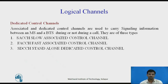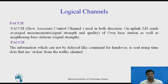The last group is dedicated control channels. Signaling information is carried between MS and BTS using associated and dedicated control channels, during or not during a call. There are three types: SDCCH (Standalone Dedicated Control Channel), SACCH (Slow Associated Control Channel), and FACCH (Fast Associated Control Channel). Non-urgent information, such as transmitter output power, is transmitted using the SACCH. On the uplink, the MS sends averaged measurements for its own and neighboring base stations. On the downlink, the MS receives system information including transmit power and timing advance. It is transmitted at every 13th frame of the TCH.